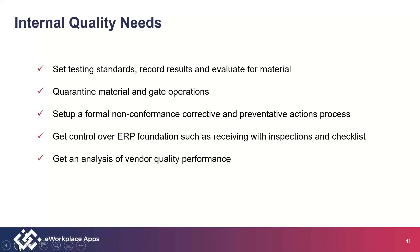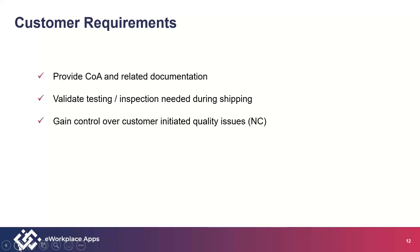For internal control needs, people need the ability to set standards for what needs to be tested, how to record results, and how to evaluate results and material. In many cases, material is either quarantined or gated. Quarantine means when it comes in off the truck or off the assembly line, we prevent it from being sold or used. Gating means limiting movement from one work cell to another until quality completes its tasks. There also needs to be a non-conformance and corrective action process. We need to integrate ERP with the overall inspection process, and vendor performance is very critical — the QMS helps evaluate vendor quality performance.